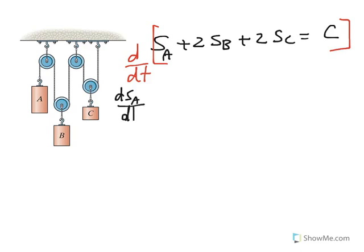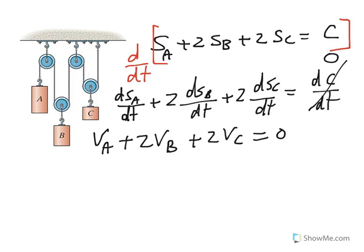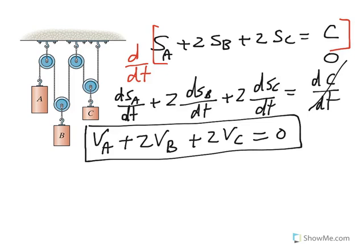You take the derivative of S sub A, 2 times derivative of S sub B, and then 2 times derivative of S sub C. We call derivative of S sub A, we call derivative of a constant. And, of course, derivative of a constant is 0, and this becomes velocity of A plus 2 velocity of B plus 2 velocity of C equals 0. And that's exactly the equation I wanted to get, this kinematic relation. Remember, you could take the derivative of this and get exactly the same expression for acceleration. Acceleration of A plus 2 acceleration of B plus 2 acceleration of C equals 0. It's exactly the same relation.